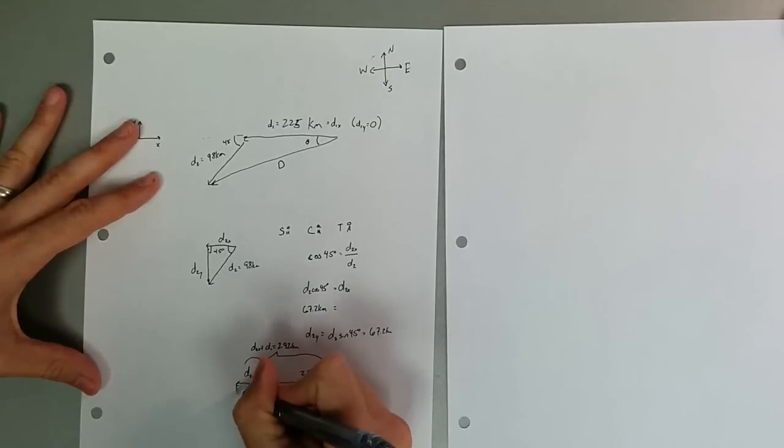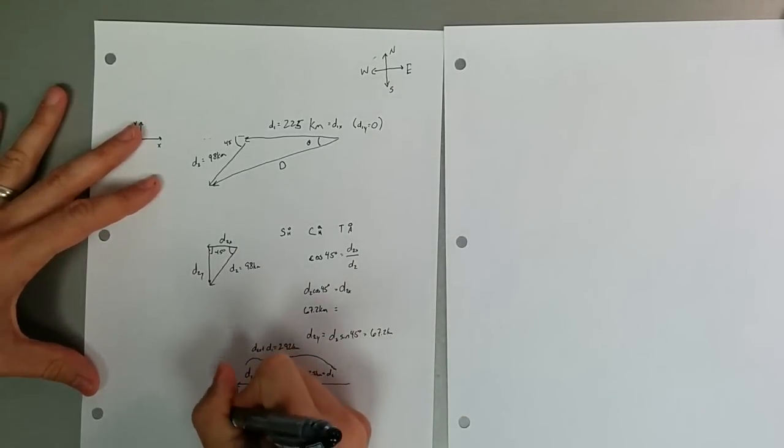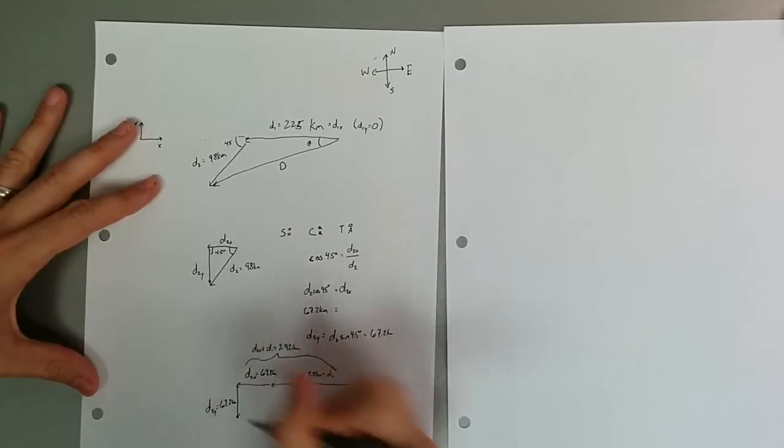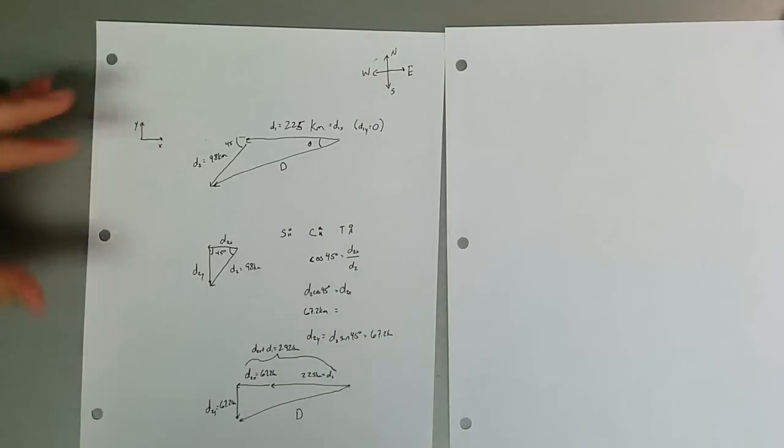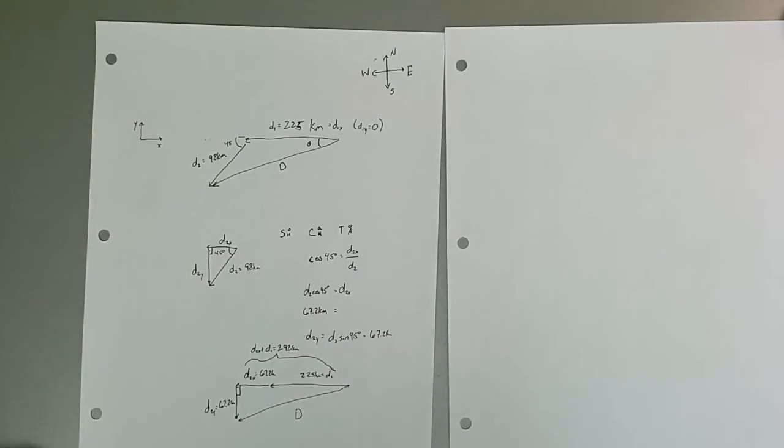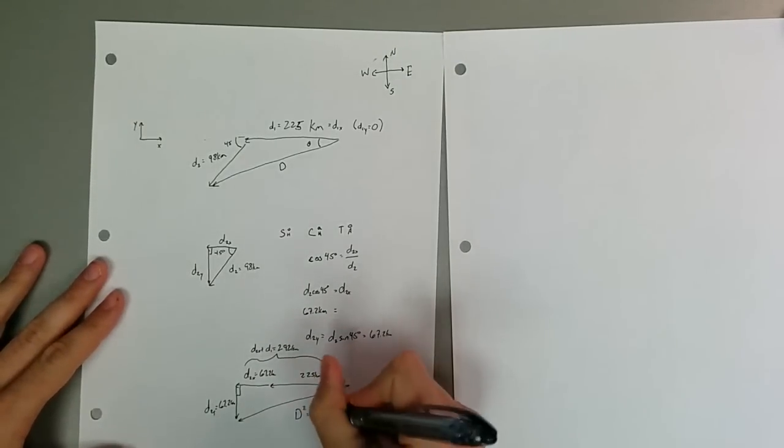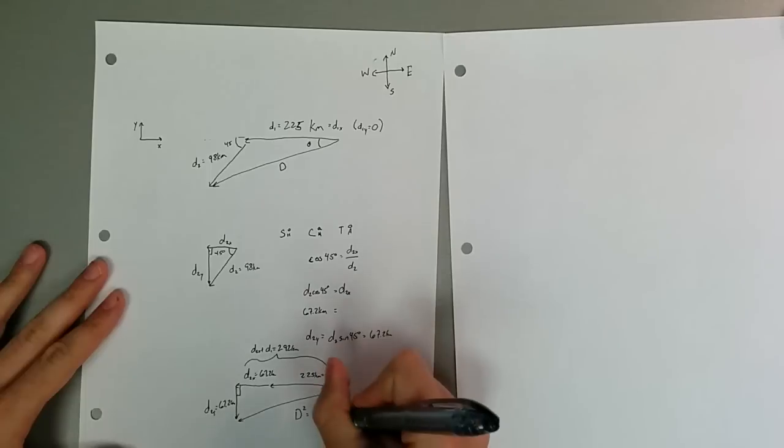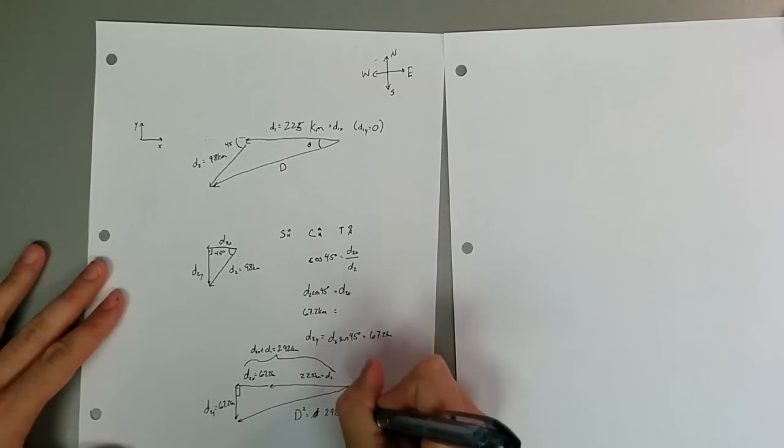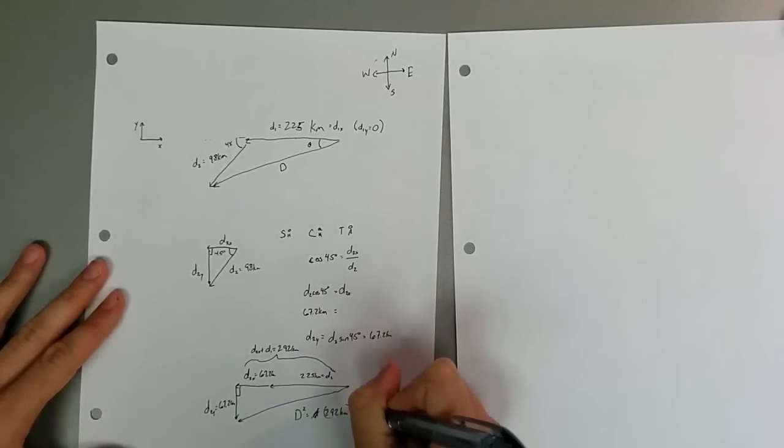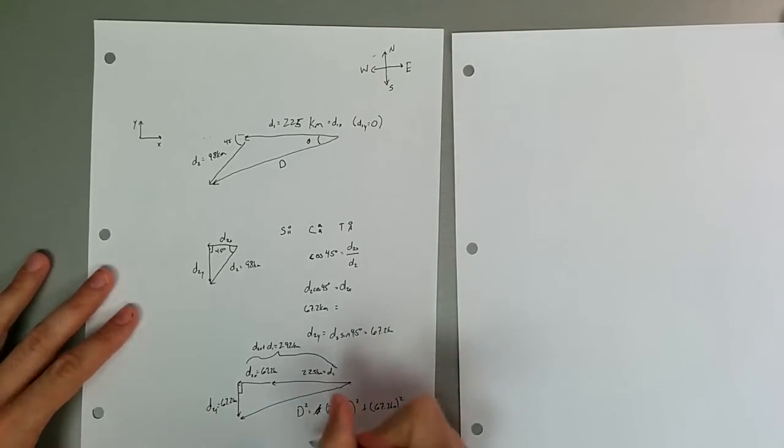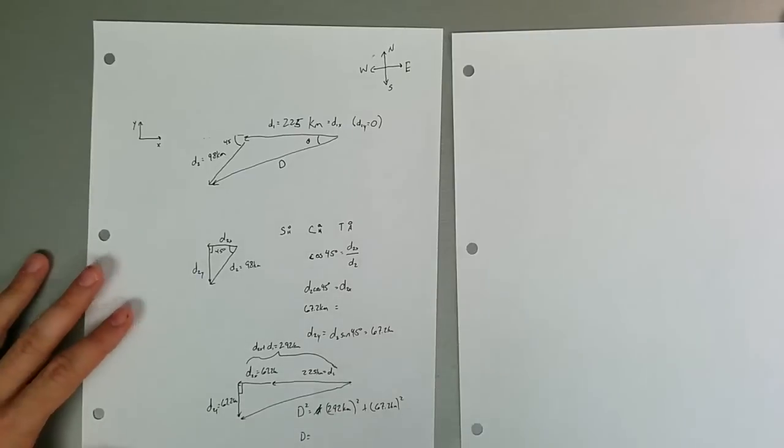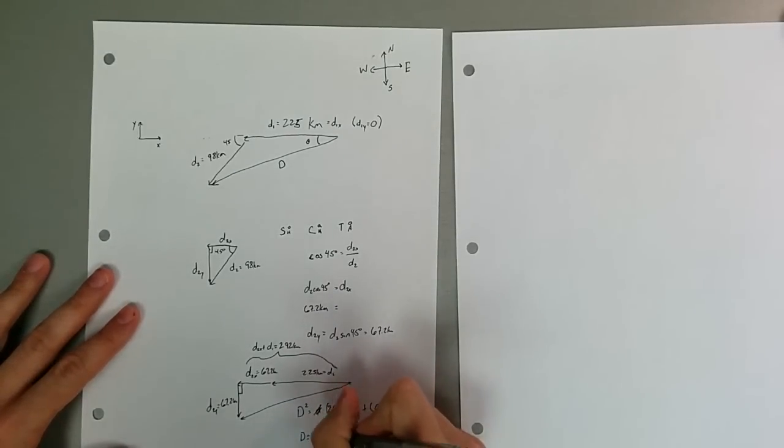Now, we just need the y component of it. Again, d2y is equal to 67.2 kilometers, meaning that this total d, we have a right angle again. We can use the Pythagorean theorem, so d squared is just equal to 292 kilometers squared plus 67.2 kilometers squared. Take the square root of both sides, and we get the d. The size of d is 300 kilometers.